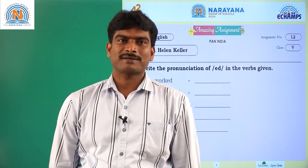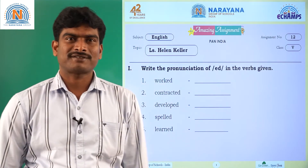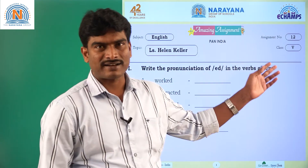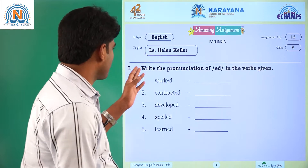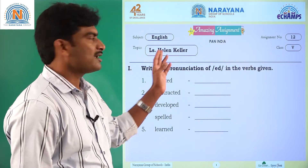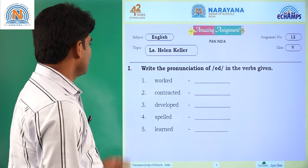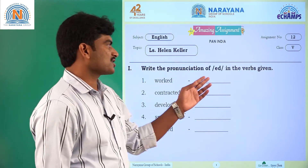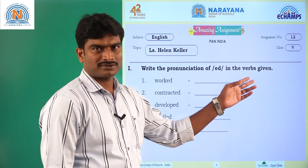Hi Helen, welcome to the Level Learning session of Narayana. Today the assignment is class 5 and the topic is from the lesson Helen Keller. Roman number 1: write the pronunciation of ED in the verbs given.